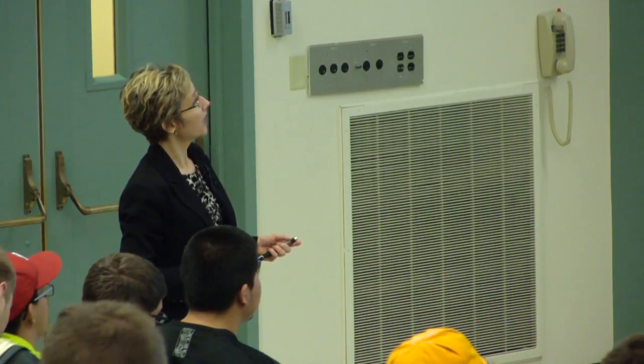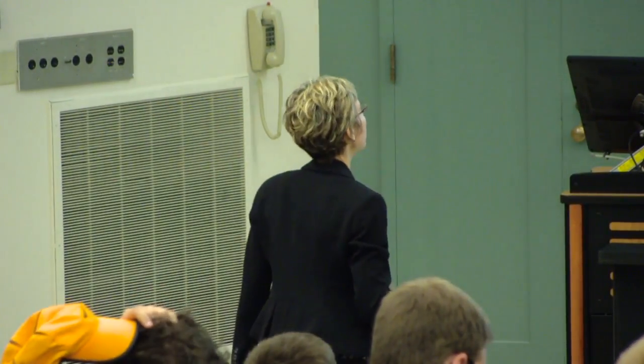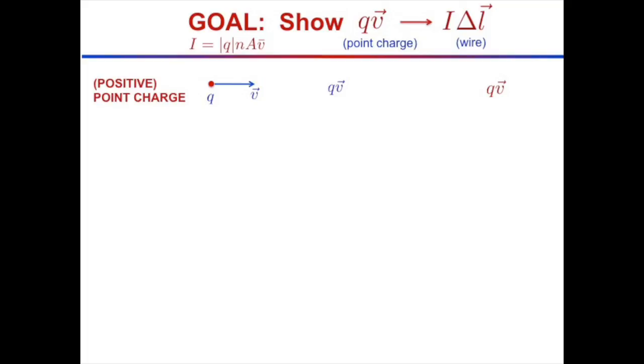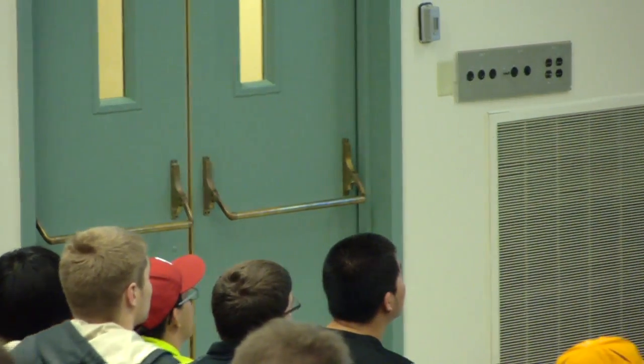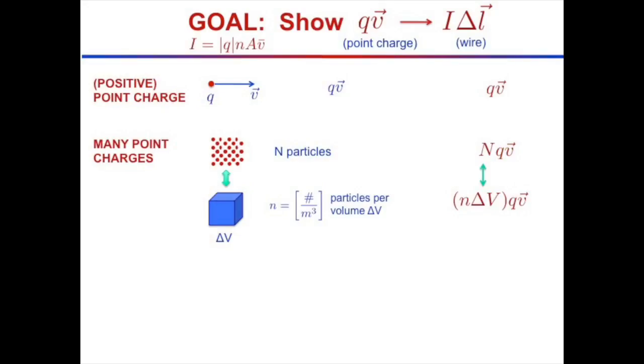The only difference is that QV for the point charge becomes I delta-L. We need to figure out how to convert from QV to I delta-L in the case of many particles. Think of many point charges going by — so many that I count them as n point charges and write NQV, where big N is the number of particles.